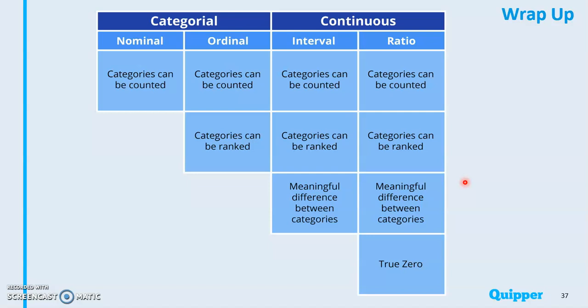Based on the level of measurement, we have categorical and continuous variables. Under categorical, we have nominal and ordinal. For nominal, categories can be counted. For ordinal, categories can be counted and can be ranked. Under continuous variable, we have interval and ratio. For interval, categories can be counted, categories can be ranked, and there is a meaningful difference between categories. For ratio, all of that is applicable to ratio variable, and there is a true zero point.